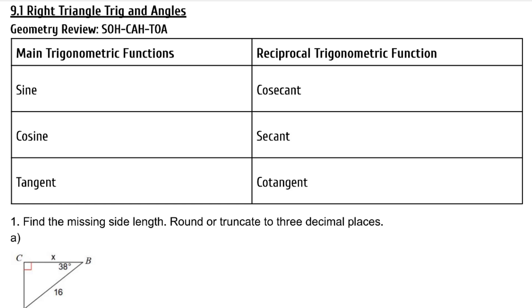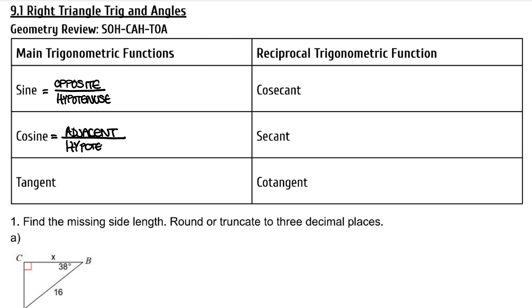Today we're going to talk about right triangle trig and angles. Remember SOHCAHTOA from Geometry? Sine of an angle is equal to the opposite side over the hypotenuse. Cosine of an angle is equal to the ratio of the adjacent side over the hypotenuse. And tangent of an angle is equal to the ratio of the opposite side over the adjacent side.